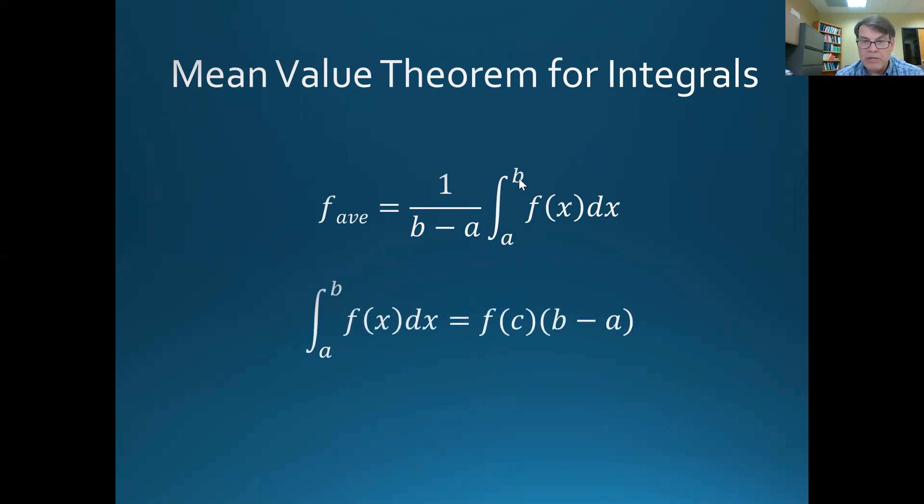Now, we can take this, and we can multiply both sides by b minus a, and isolate this part. And we have, basically, the integral from a to b of fx dx is equal to some point c, f average. f average is the point, basically, where the ups and the downs equal. The point on the function where the ups and the downs equal, that's point c. So f of c is f average times b minus a, because I multiplied it out. So there's a point c.